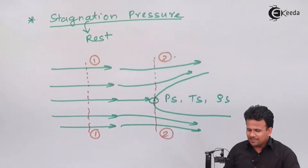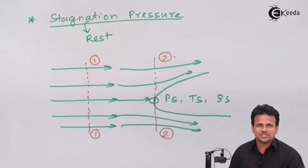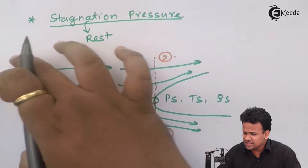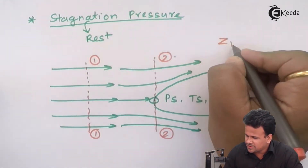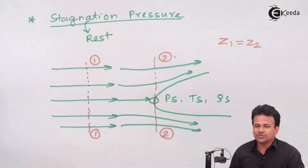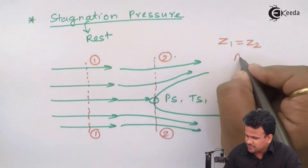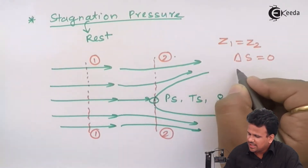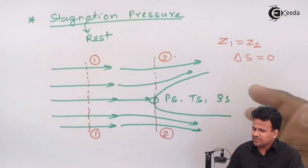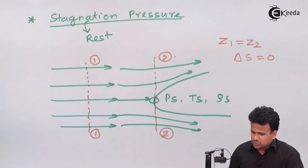Now let us apply Bernoulli's equation, provided one condition is satisfied: the flow is in the horizontal plane. If it is in the horizontal plane, then z₁ equals z₂. We also assume it is an isentropic process — that is, an adiabatic process where entropy remains constant. So let us apply Bernoulli's equation.